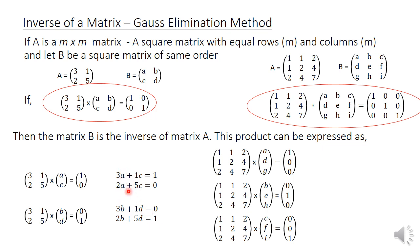For the 3 by 3 case, the product is expressed as three separate equation sets. The first: A times the first column [a, d, g] equals [1, 0, 0]. The second: A times the second column [b, e, h] equals [0, 1, 0]. The third: A times the third column [c, f, i] equals [0, 0, 1].